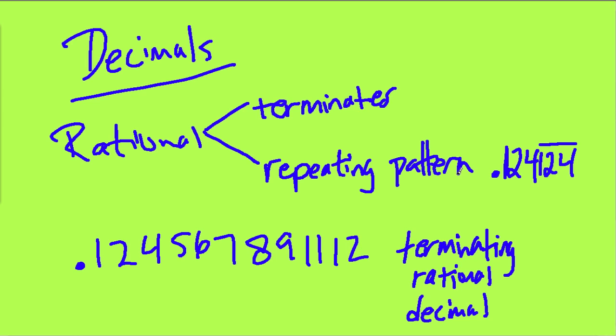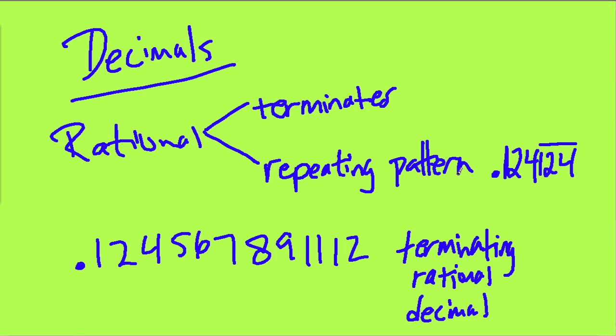Why does that make sense? Let's look at a couple of examples. A repeating decimal, like 0.3 repeating - here's a rational decimal. The 3 is repeating over and over again. This can be written as a fraction: 3 over 9 or 1 third.